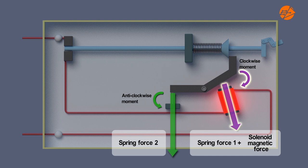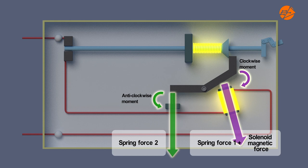At this point, the clockwise movement due to spring force 1 and the magnetic force of the solenoid is greater than the anti-clockwise movement due to spring force 2 about the same pivot.